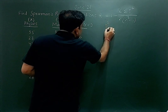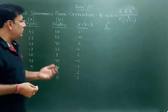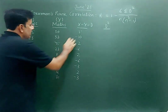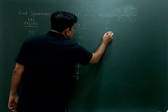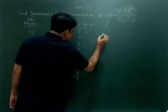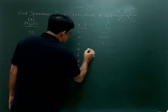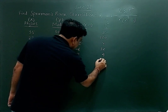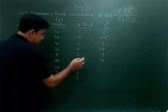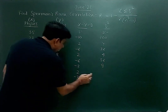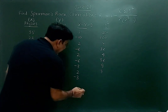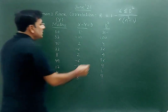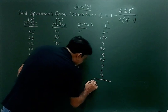Now we need to find d². We square the values to remove the minus signs. 5² = 25; (−10)² = 100; 2² = 4; (−6)² = 36; 2² = 4; (−6)² = 36; (−3)² = 9; 2² = 4; (−3)² = 9. Now add all these to get Σd².